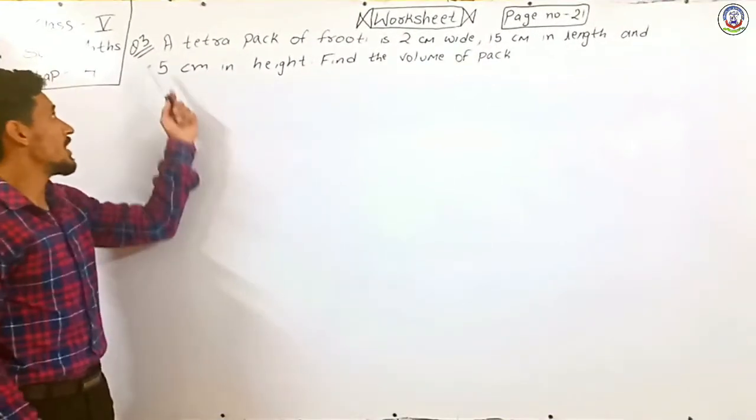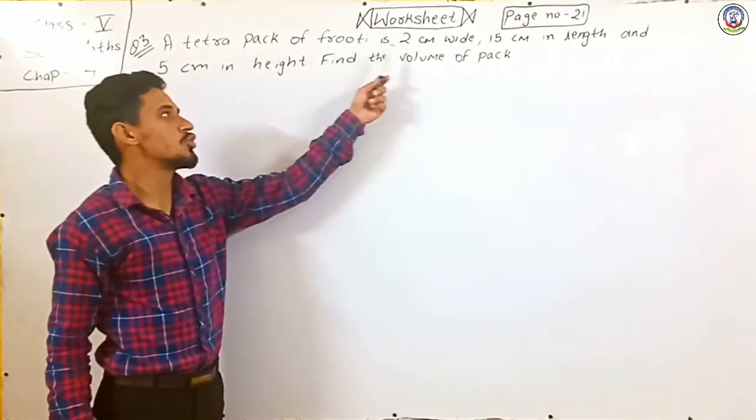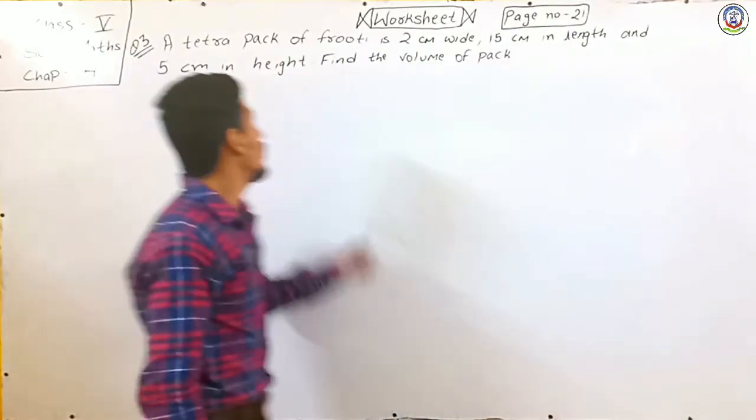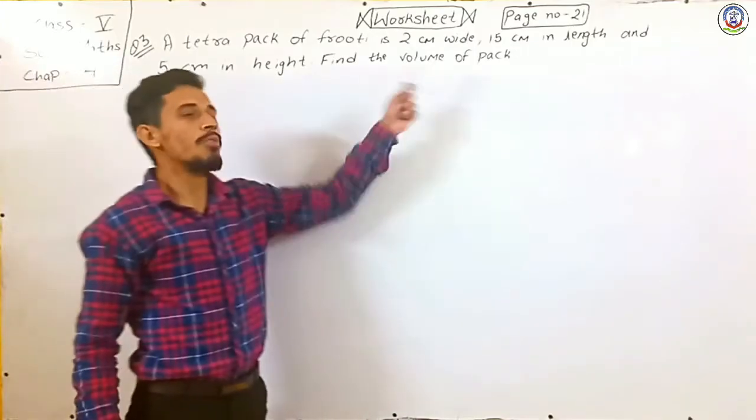Now question number three. A tetra pack of fruity is two centimeter wide, fifteen centimeter in length and five centimeter in height. Find the volume of pack.